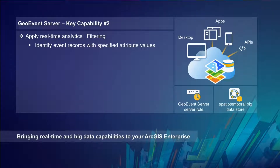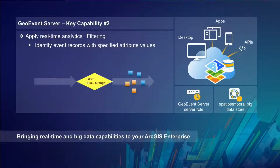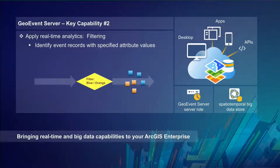The second key capability is that once we have the data ingested, we want to do some real-time analytics on that data — for example, filtering. I can configure a filter that's only going to allow events with certain attributes, in this animated example items that are blue or orange, to flow through the filter, actively discarding events that are not of interest. With real-time, you have data coming in at high velocity and high volume, and you want to drill into events of particular interest.